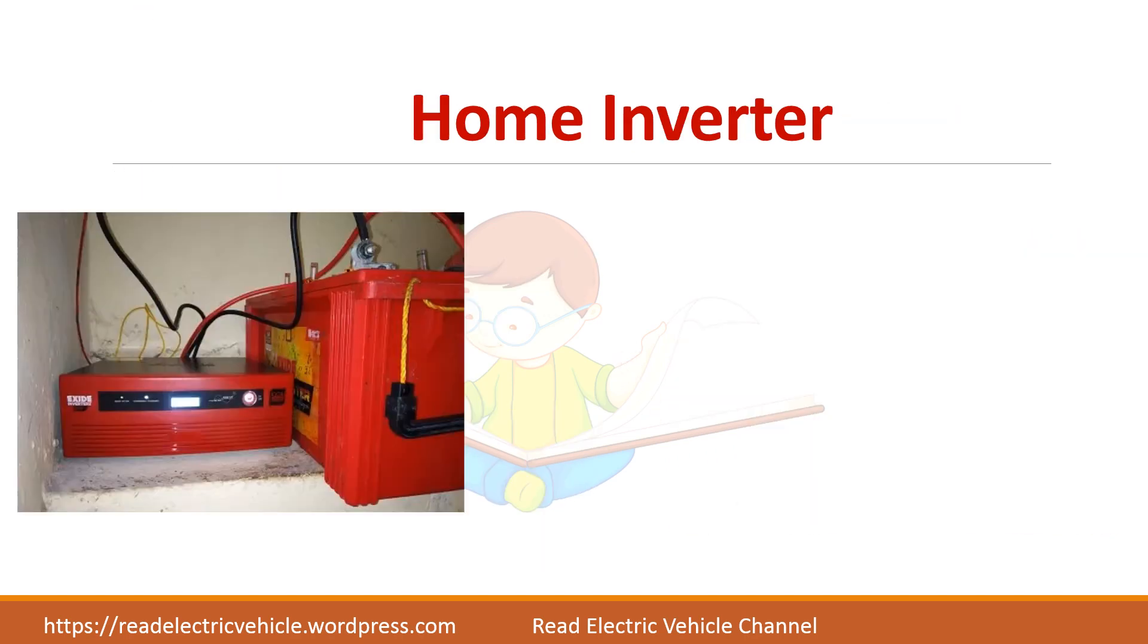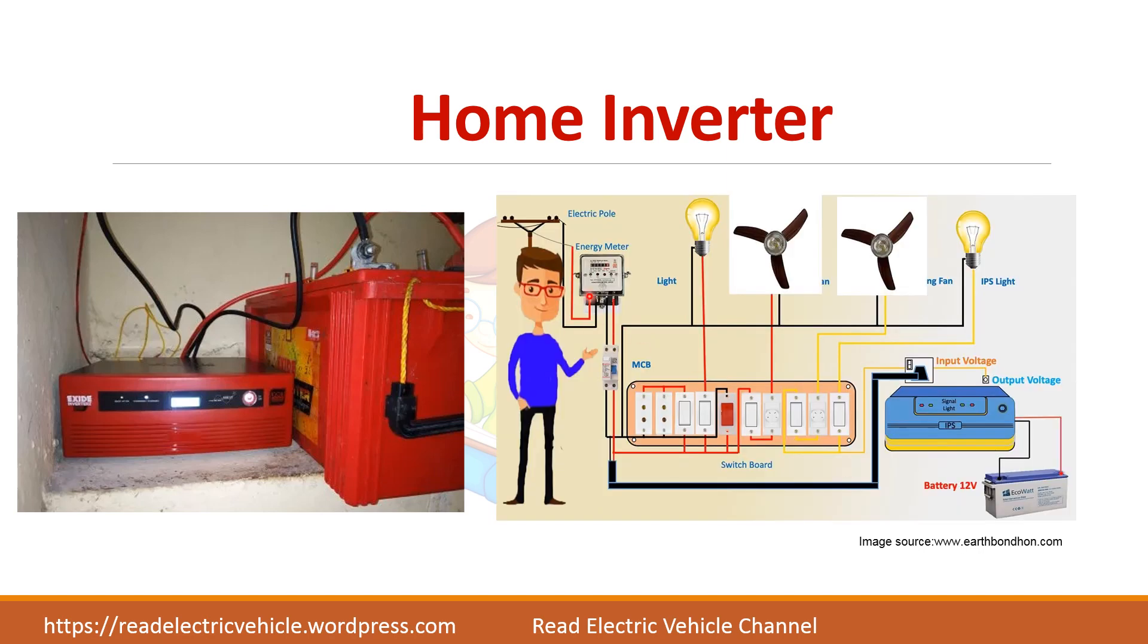If you take a home inverter, when there is AC power available this inverter unit can act as a rectifier and charge the batteries. So it converts AC to DC and charges the battery, and when there is a power cut the charge stored in the battery is used to supply the AC loads using this inverter. Actually it is called an inverter unit but it can perform both rectification and inversion.